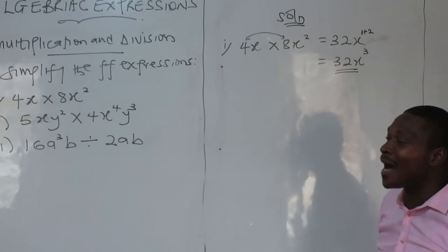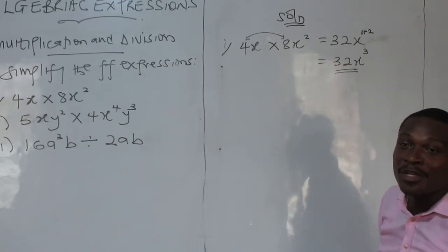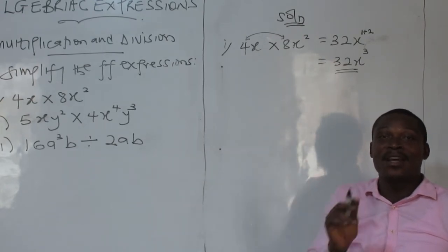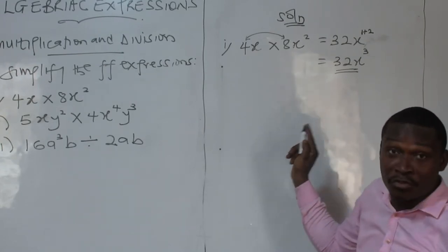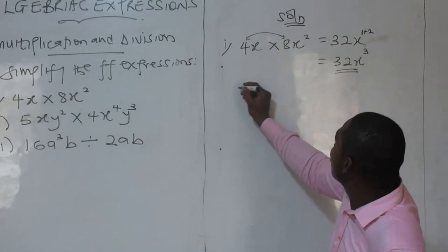So you are going to get 32x cubed. That is how we normally get 32x cubed when we multiply. But in addition, we don't add powers. We don't multiply powers. We just make sure the exponents are the same. Then we factor 1. That is also one line of confusion.